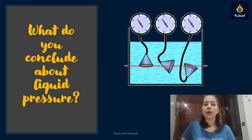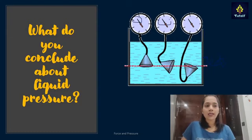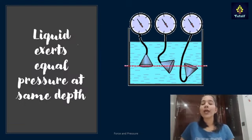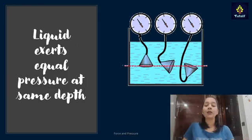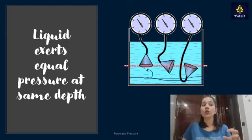A level has been marked with a red line and the manometer has been placed at different positions along the same horizontal line. The manometer reading is the same — the pointer points in the same direction, the magnitude is the same. Hence, liquid exerts equal pressure at the same depth. If a manometer were placed deeper, the reading would be greater because depth has increased.